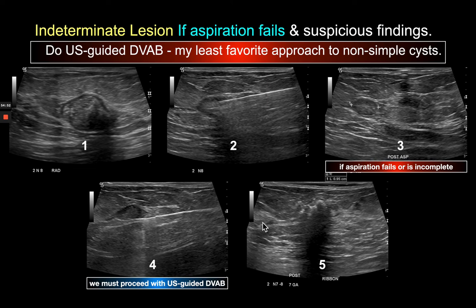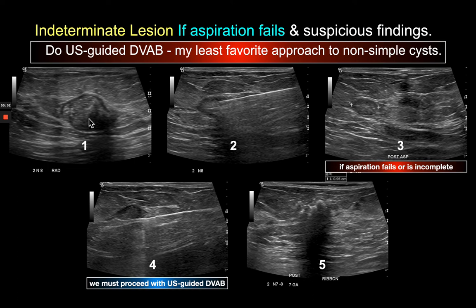I don't recommend aspiration as the first line, because partial aspiration obligates vacuum-assisted biopsy of the residual. The main reason I do these aspirations is to cancel a biopsy I didn't think was necessary — often because the appearance of these lesions can vary during the menstrual cycle. In the pre-ovulatory phase, cysts may be more echogenic and simulate a solid mass; in the post-ovulatory phase there's more fluid and they appear clearly complicated cystic.